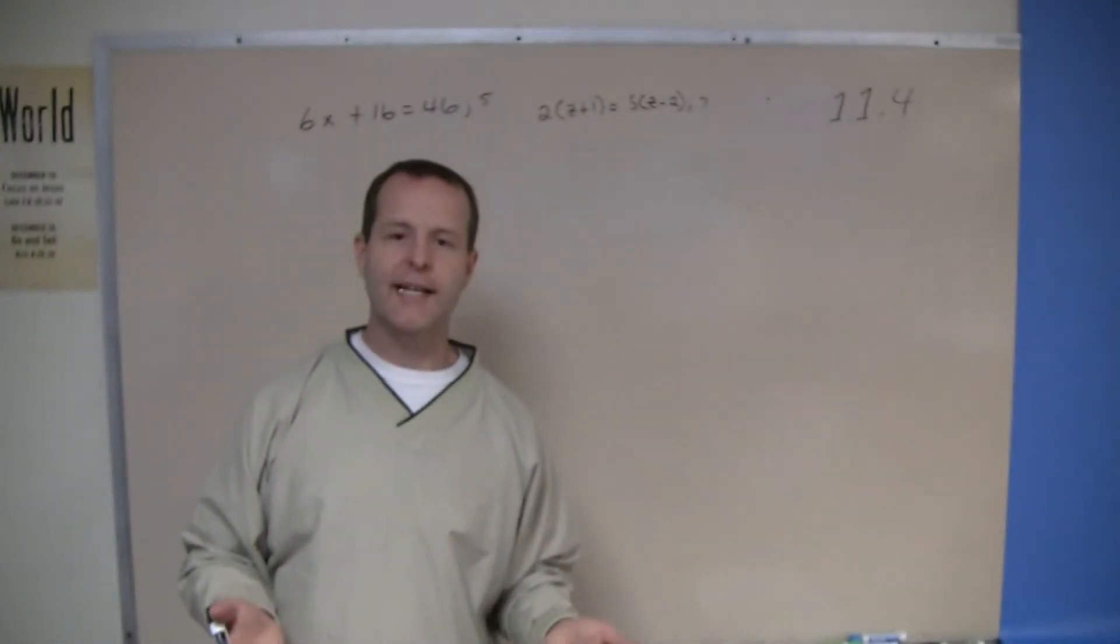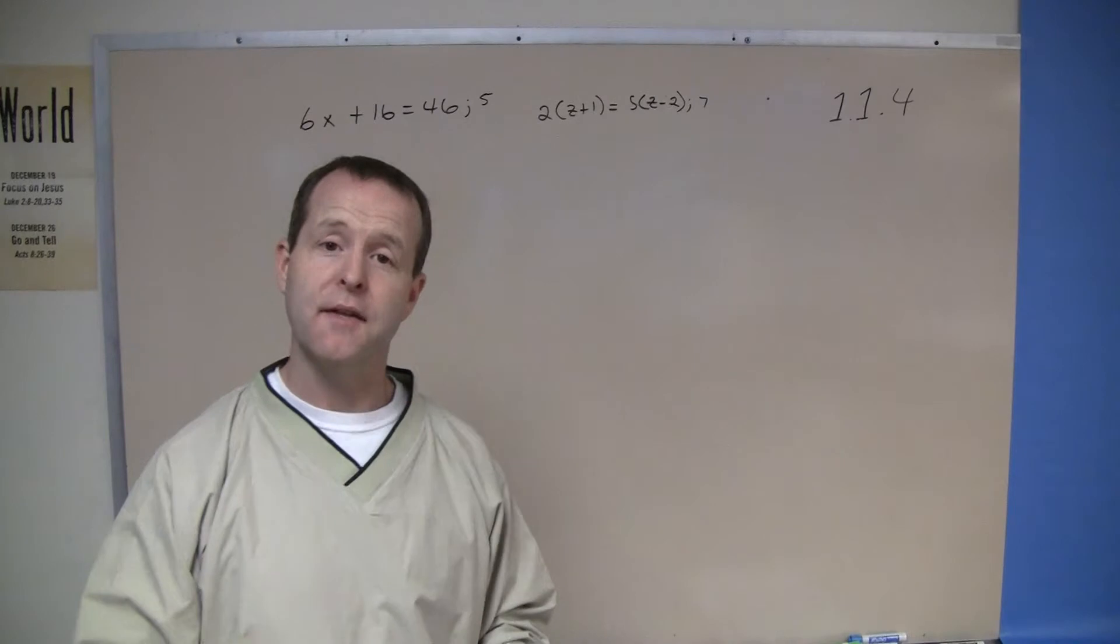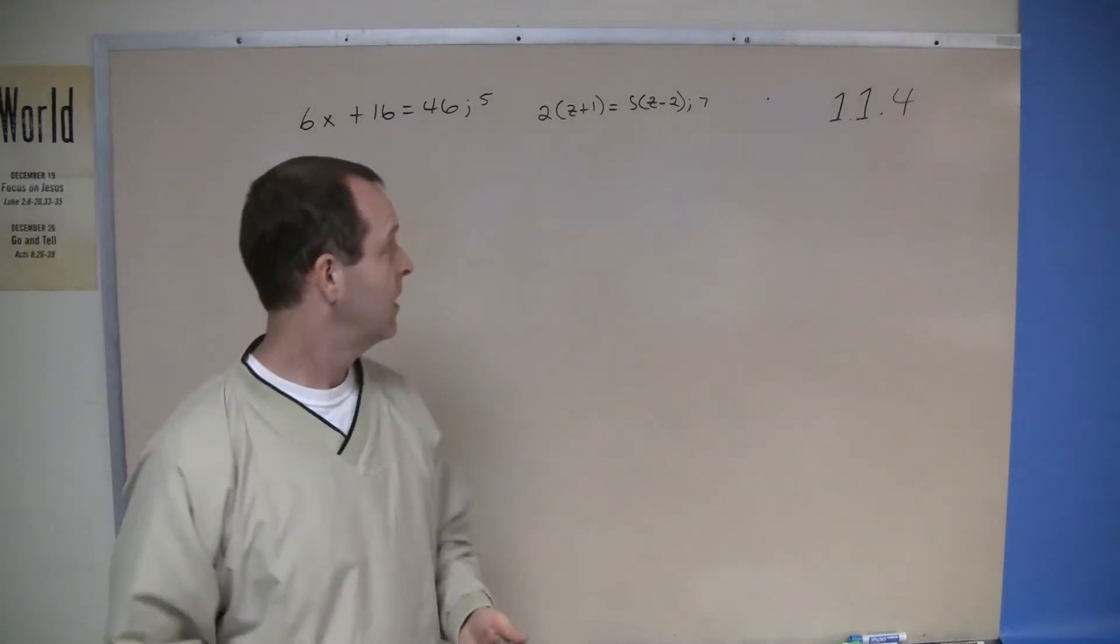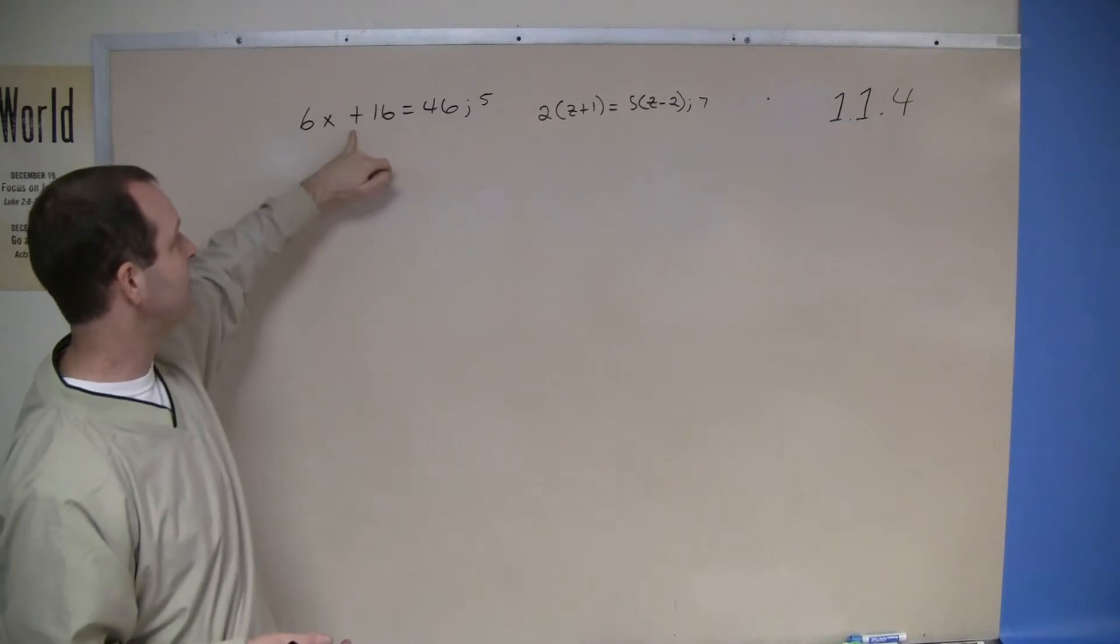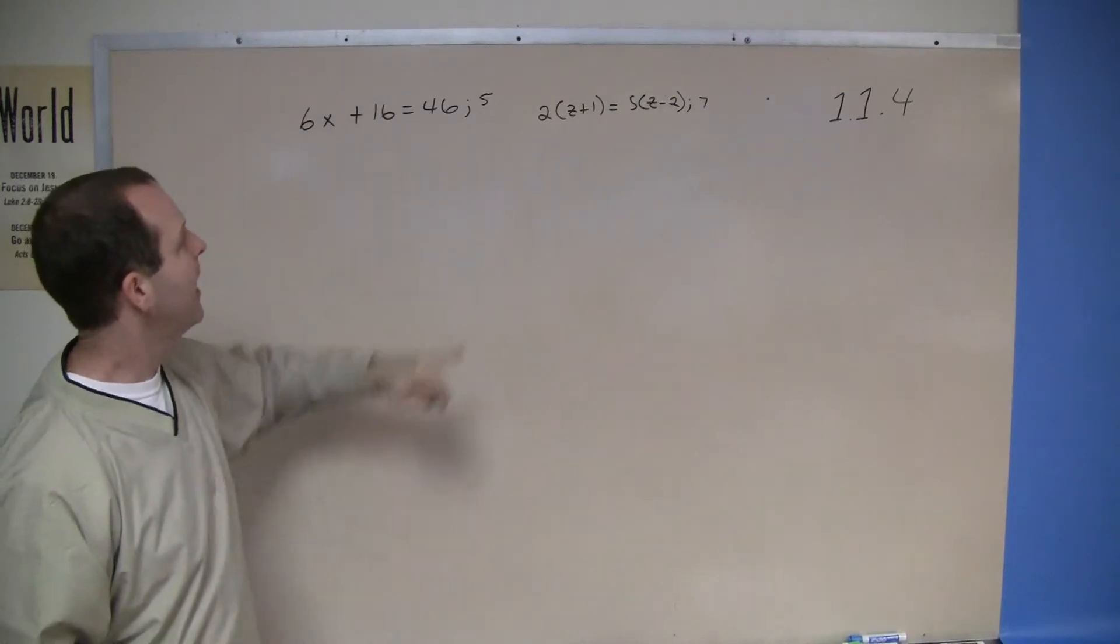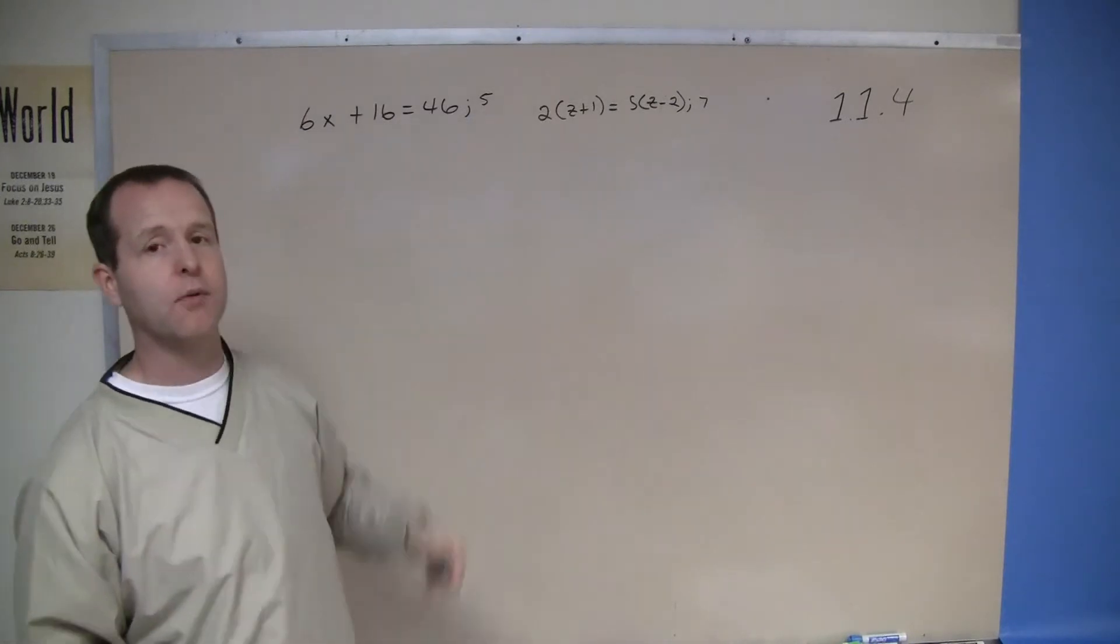In this example we are again given two expressions. Well actually this time we're given equations. An equation is when I have an equal sign in between two expressions and I'm also given a particular variable.